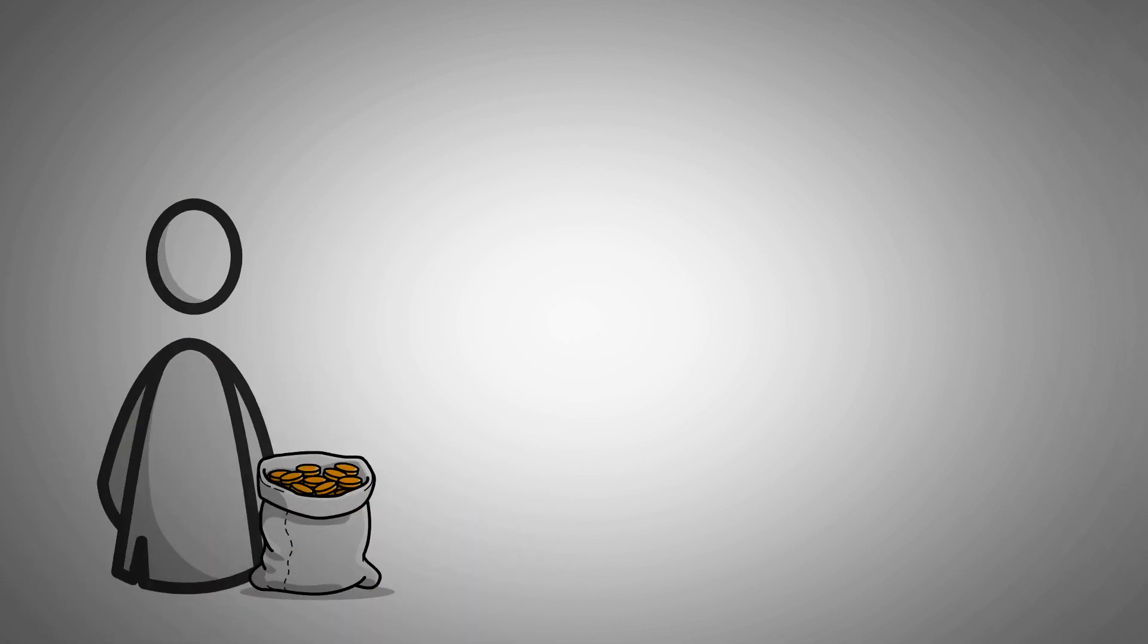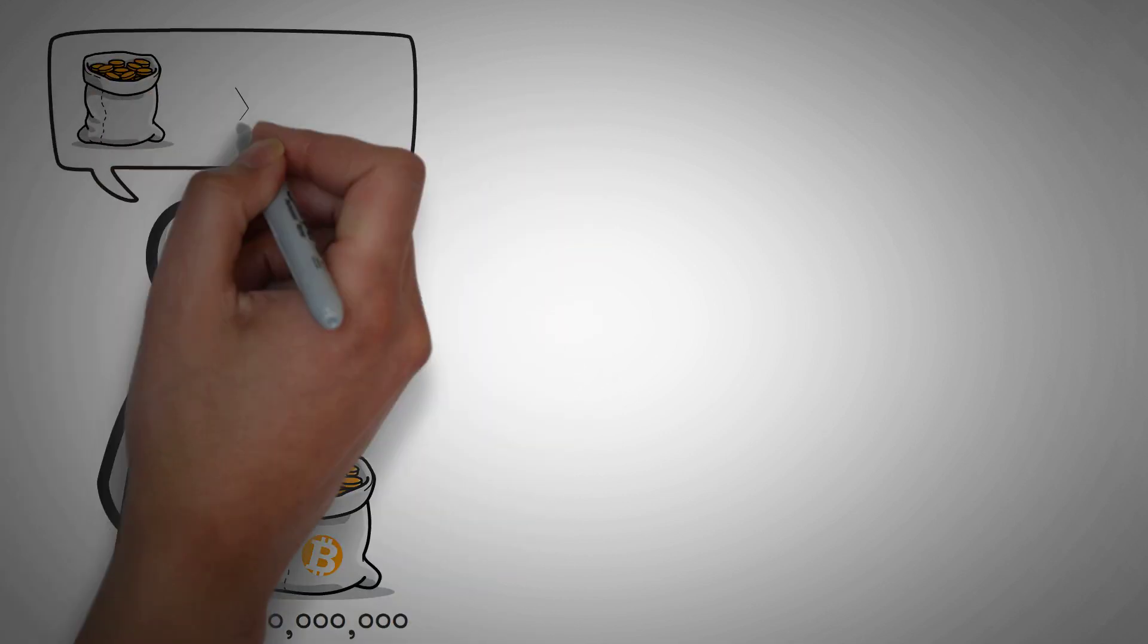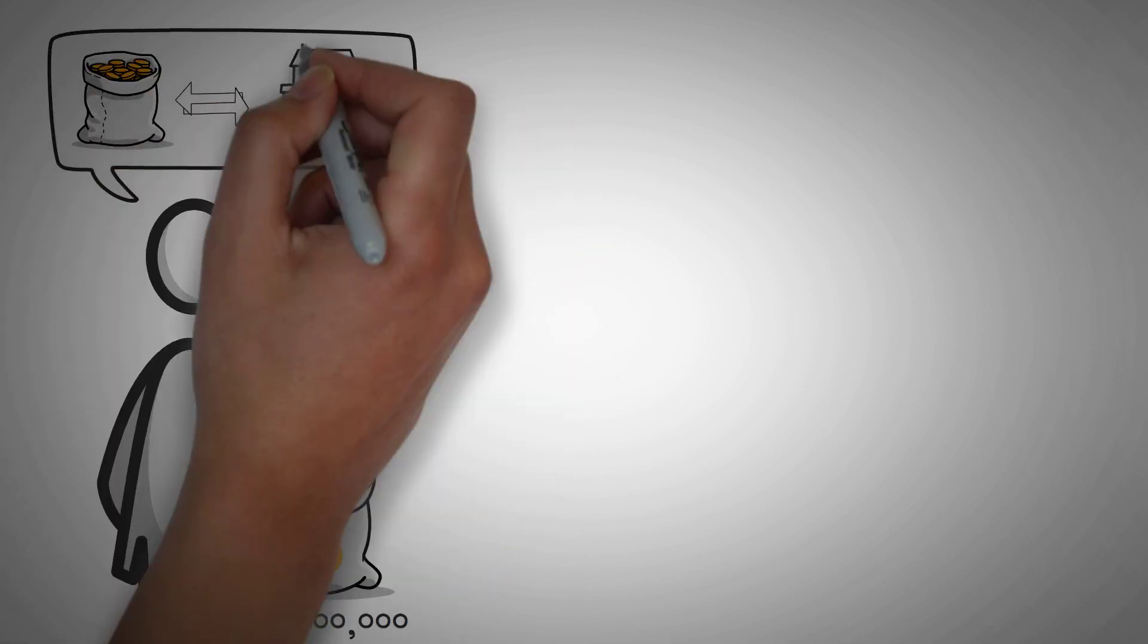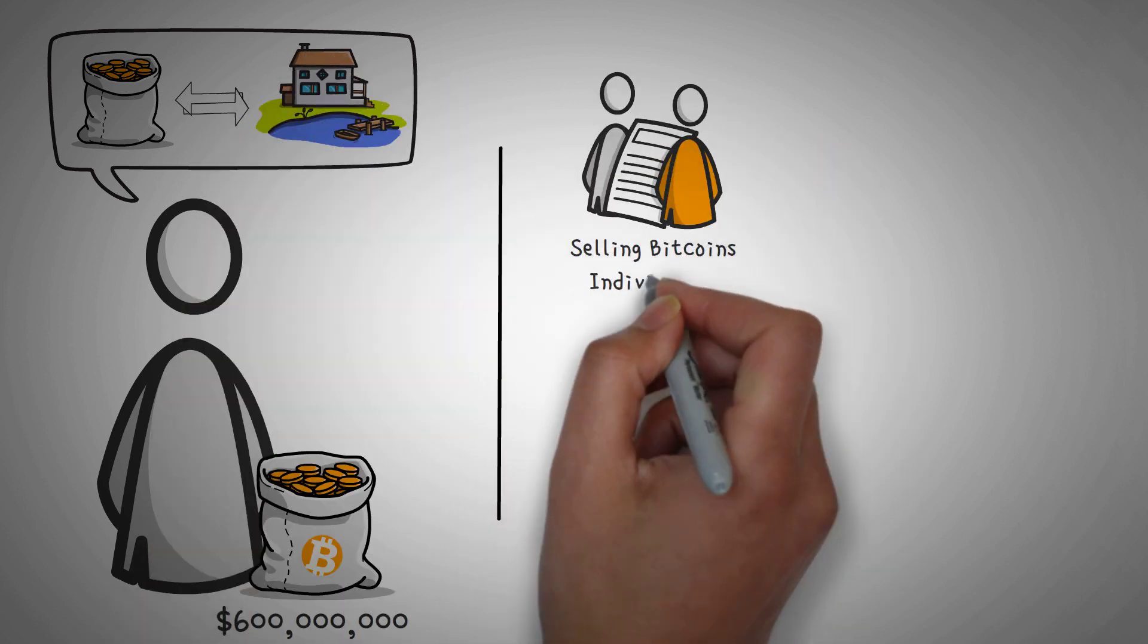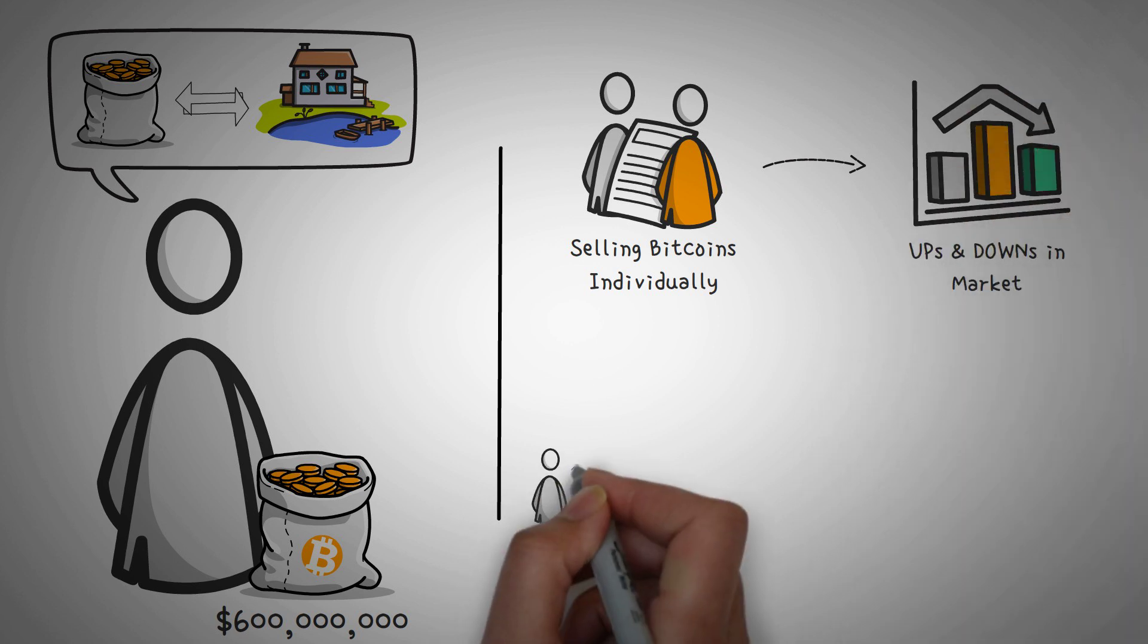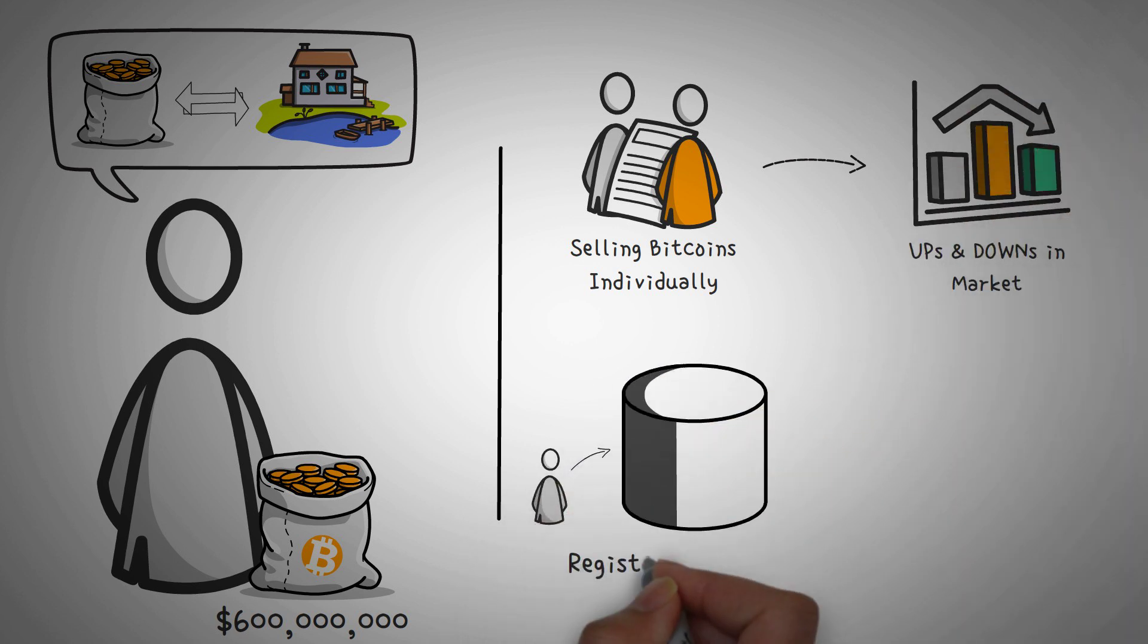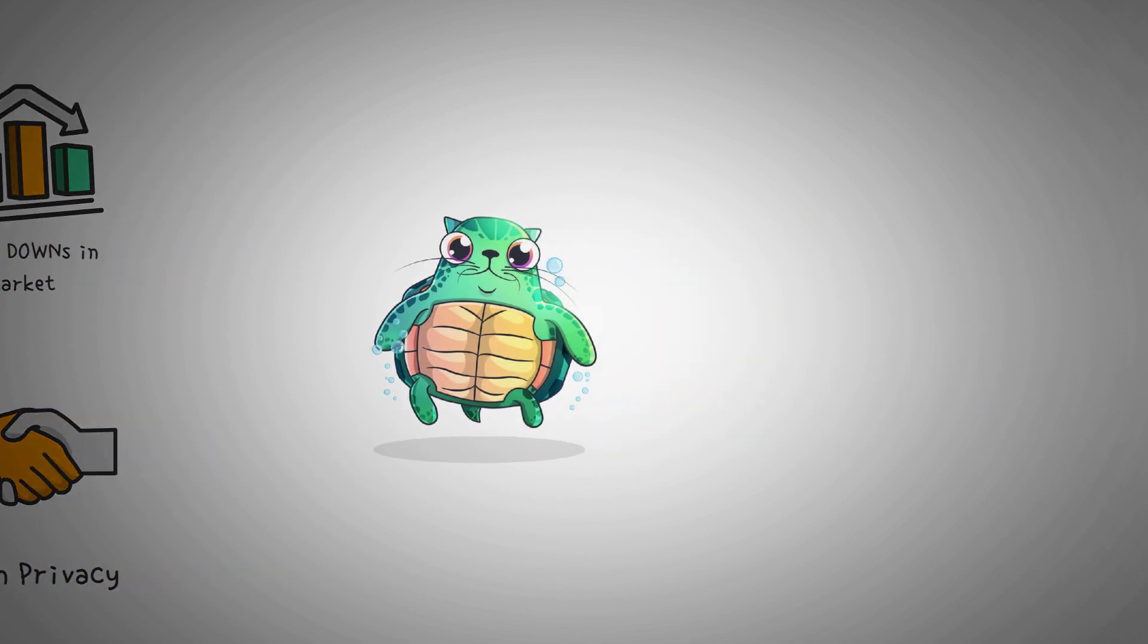Let's say you owned 20,000 Bitcoin worth around $600 million, and like most investors during a bear market, you wanted to sell it all off to fund your next set of real estate investments. Selling 20,000 individual Bitcoins would probably cause a mass market movement, so instead you go ahead and register for what is called a dark pool.